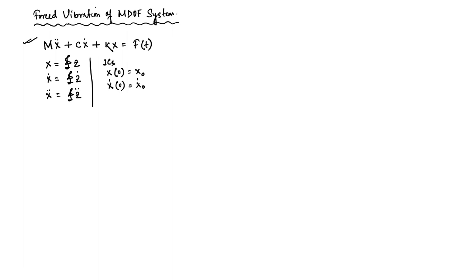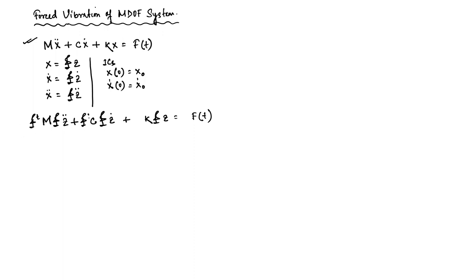Once we have the situation, we convert the equation into modal coordinates using the transformation x equal to φz, and then we use that transformation in the matrix equation. Finally, we multiply both sides by φ-transpose, and that helps us to decouple the equation.